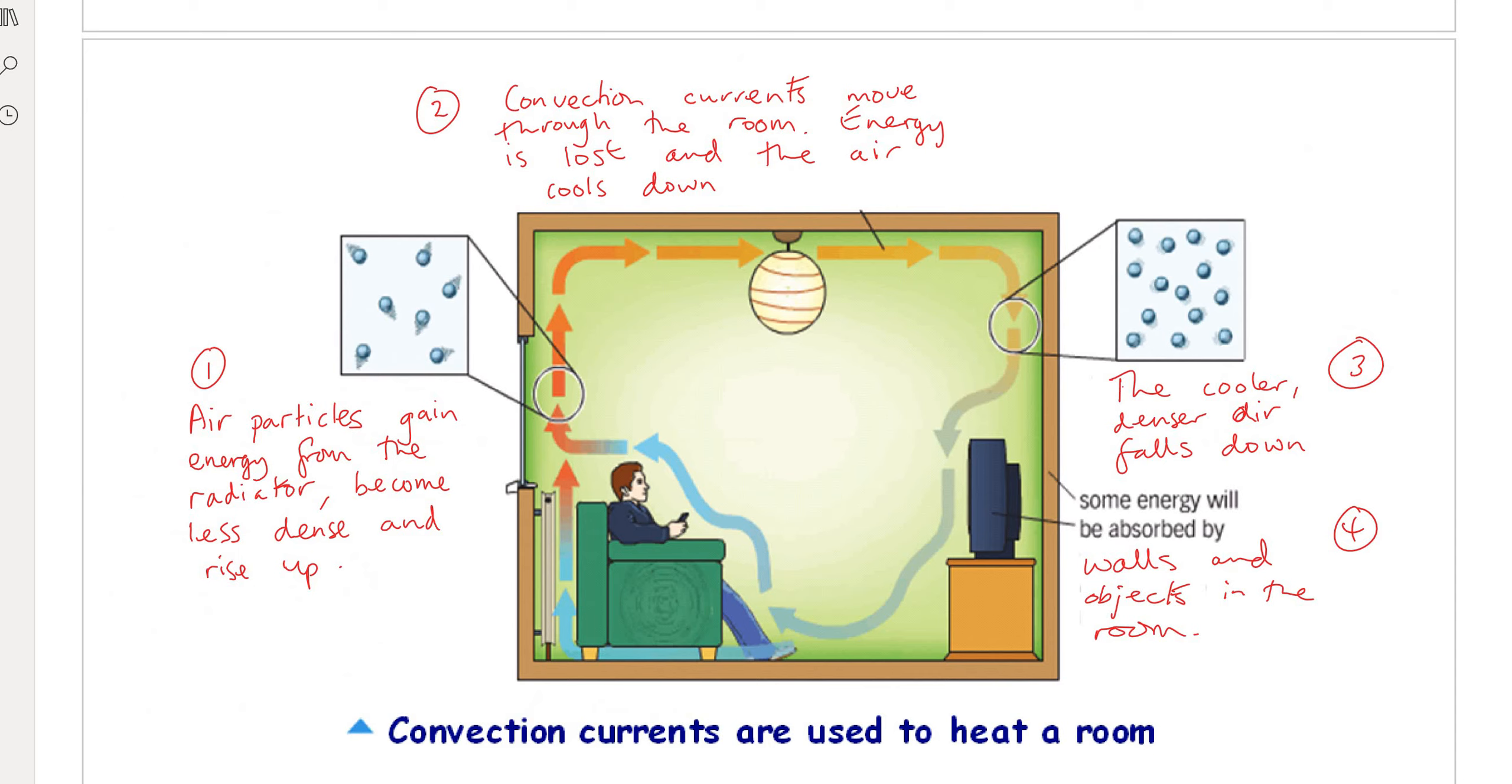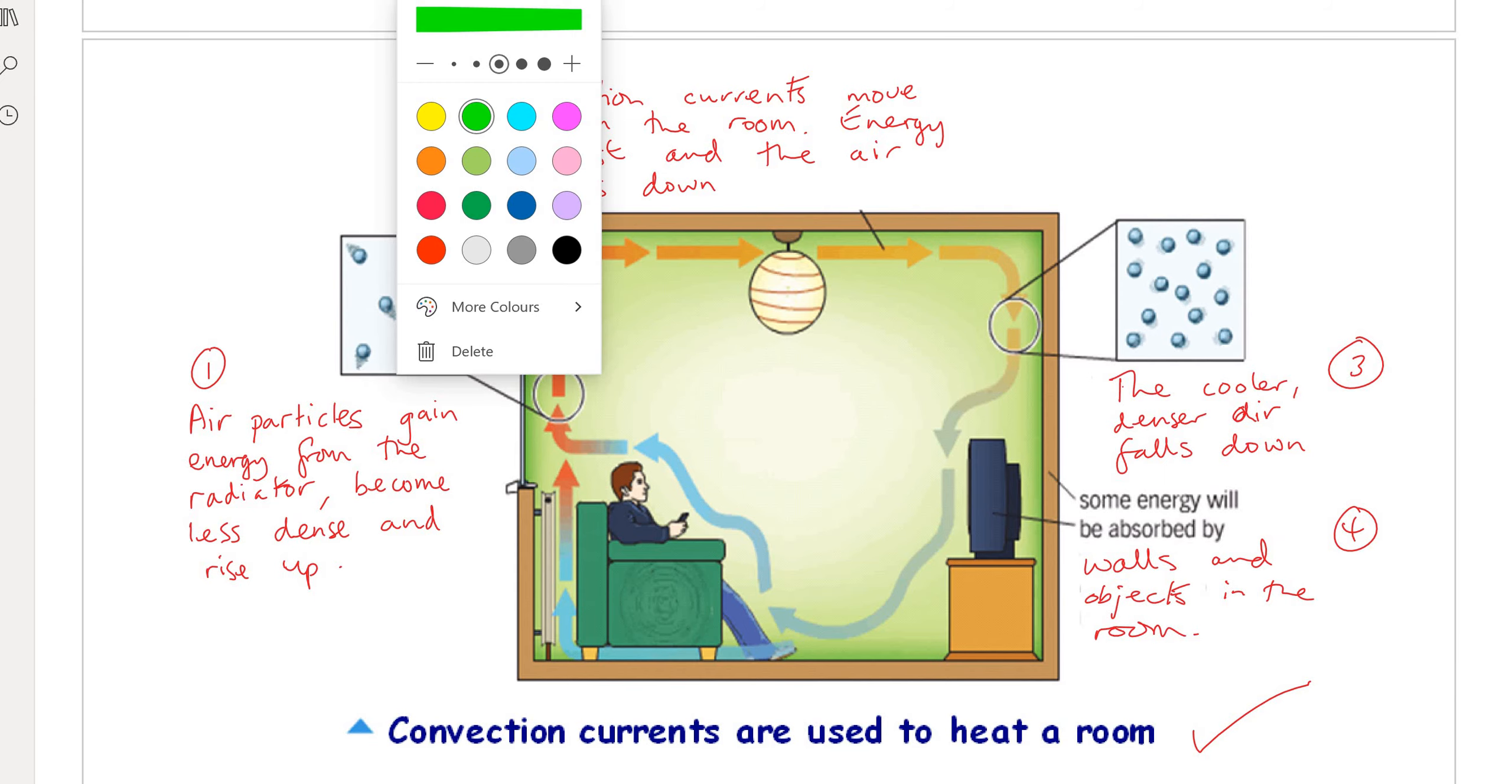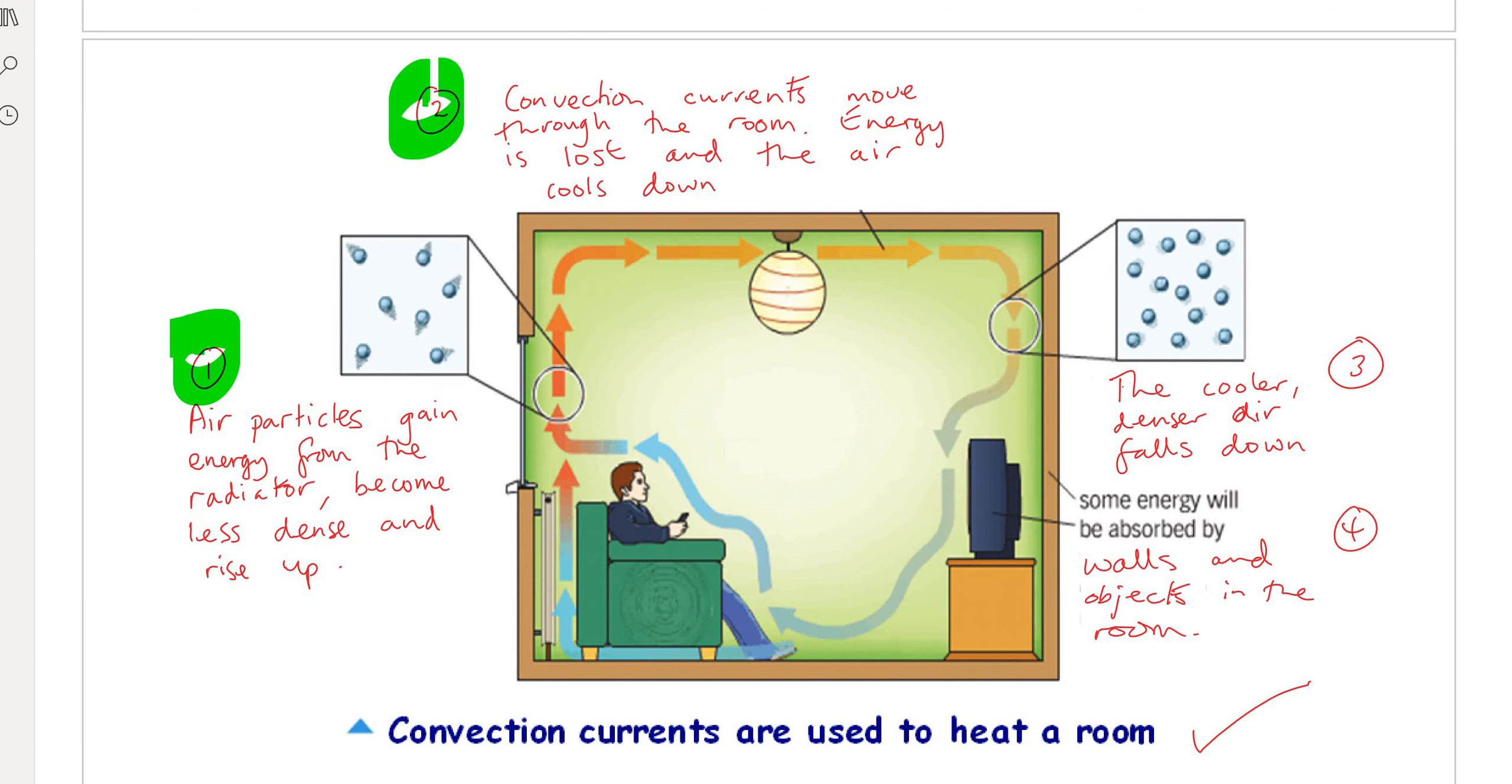Convection currents are used to heat a room. What you need to do is add the answers one, two, three, and four to this diagram and read it at the same time.